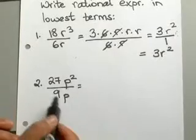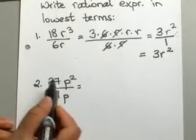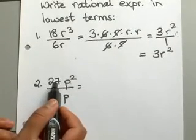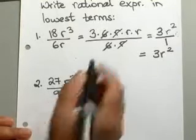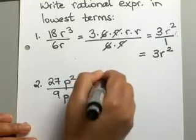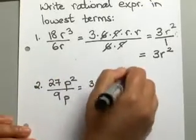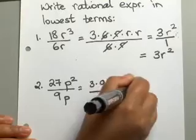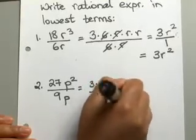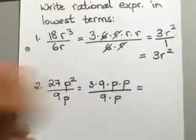So 27. Now, since your denominator is a 9, we'll go ahead and write 27 as 3 times 9. And then p square, of course, means p times p. And your denominator will be 9 times p.